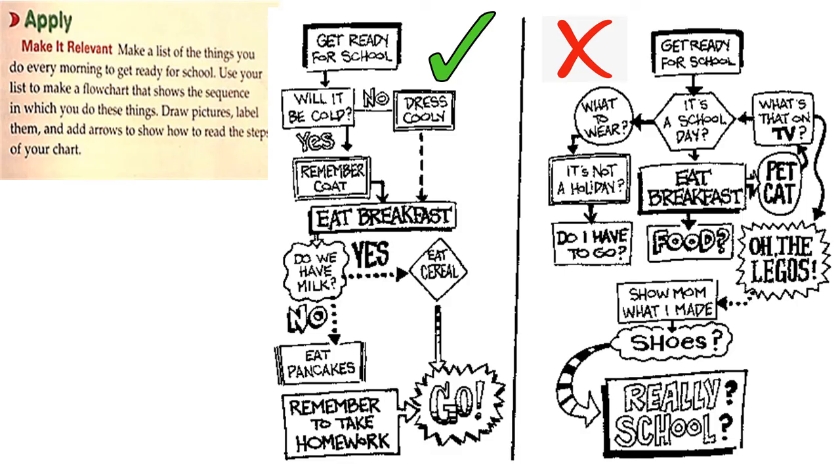All right, grade three. So now it's time to make it relevant. And here on this slide, I want you to read the instructions first. Let's read it together. Make a list of the things you do every morning to get ready for school. Use your list to make a flowchart that shows the sequence in which you do these things. Draw pictures, label them and add arrows to show how to read the steps of your chart.